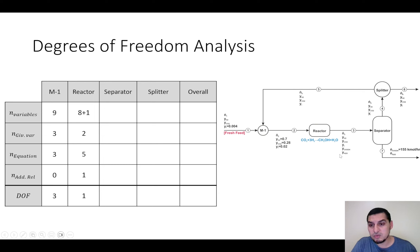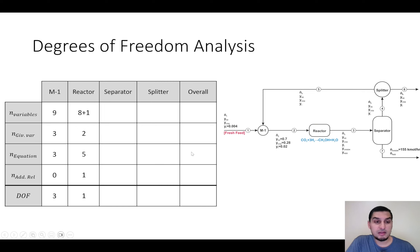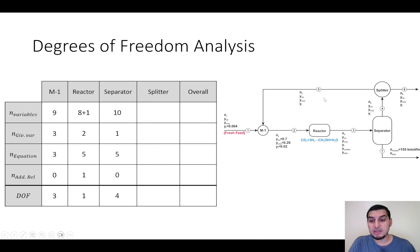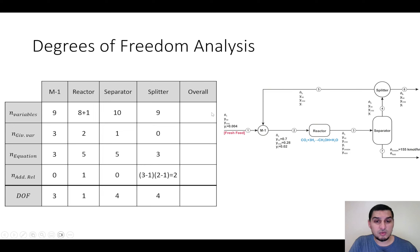For the splitter, there are three streams times three components — nine variables. There are zero given variables, three equations, and the splitter restriction which is (3−1)×(2−1) = 2 additional relations, giving four degrees of freedom. For the overall system, there are eight variables plus one for the extent of reaction, two given variables, five equations, and no additional relations, giving two degrees of freedom.